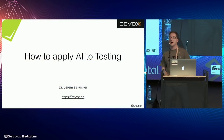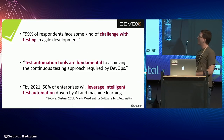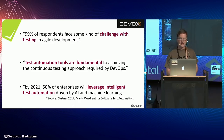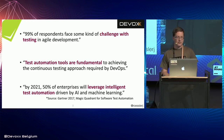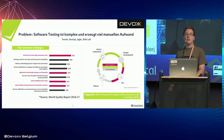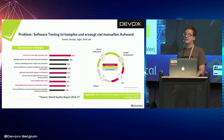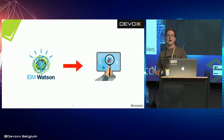Hello and welcome to my talk about how to apply AI to testing. AI has been a big hype recently, and testing is a long-standing problem. 99% of respondents in some Gartner reports said they have challenges with testing. Test automation is fundamentally required for DevOps, and 50% of enterprises are expected to leverage intelligent test automation. Testing is essentially the bottleneck in development right now — it's what hinders continuous deployment and continuous integration.